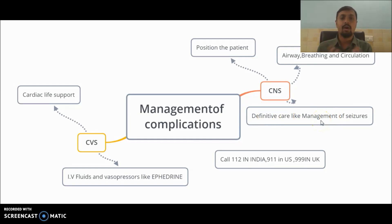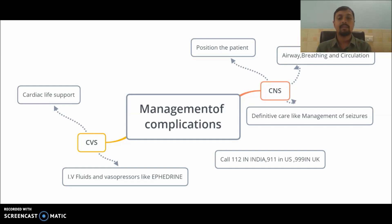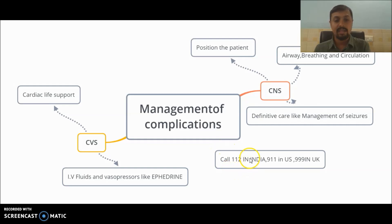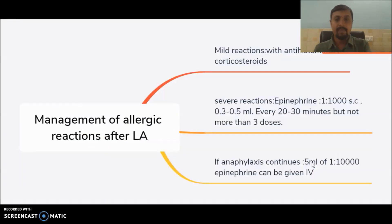For CNS management, you can use barbiturates or benzodiazepines. Never use phenytoin in such cases because phenytoin has a similar action to local anesthetics. Whenever managing such complications, perform CPR — cardiopulmonary resuscitation — and call for emergency services. In India the number is 112, in the US it is 911, and in the UK it is 999.